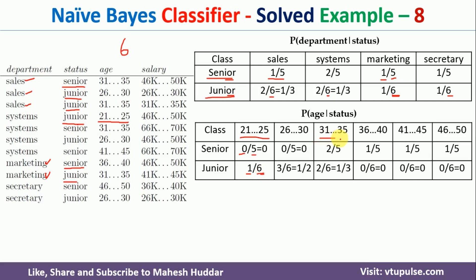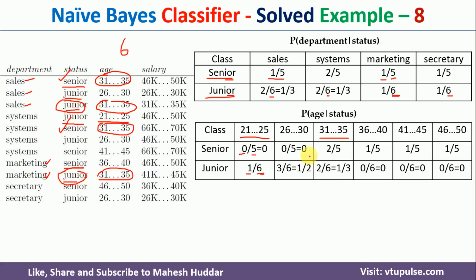For the 31 to 35 age group, there are 4 examples total. For probability of 31-35 given senior, there are 2 senior examples, so we write 2/5. The remaining 2 examples are junior, so probability of 31-35 given junior is 2/6, also written as 1/3.